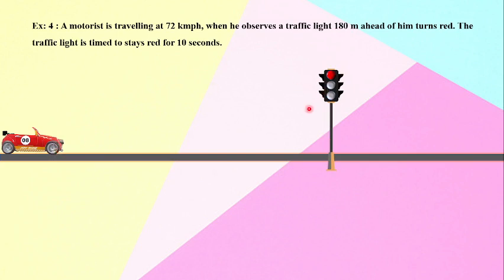But that motorist does not want to stop at that particular signal, so he has to maintain the velocity so that by the time he will be reaching this post, this particular light will turn green, meaning the traffic is allowed to move across the signal. So let us have the understanding of that particular problem.